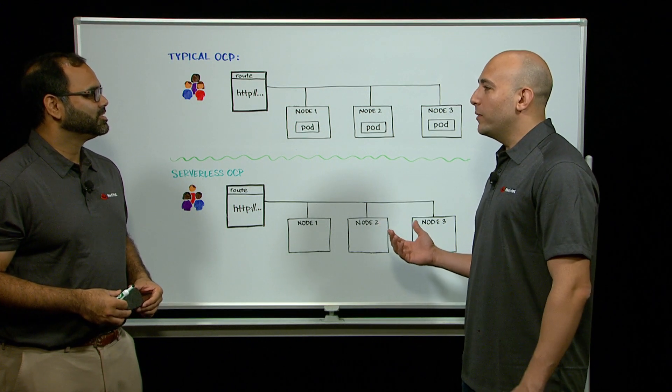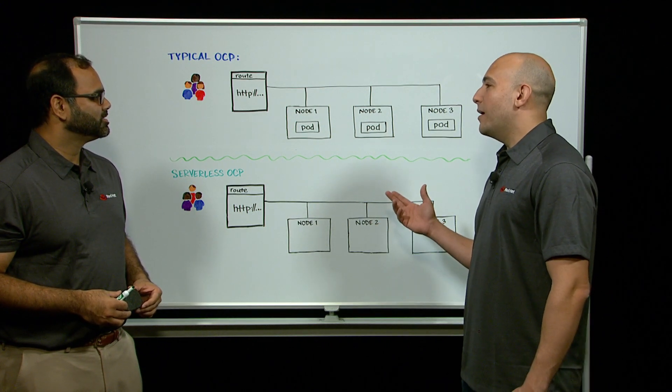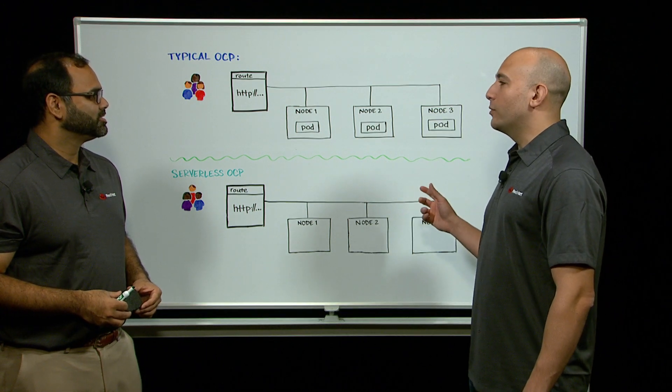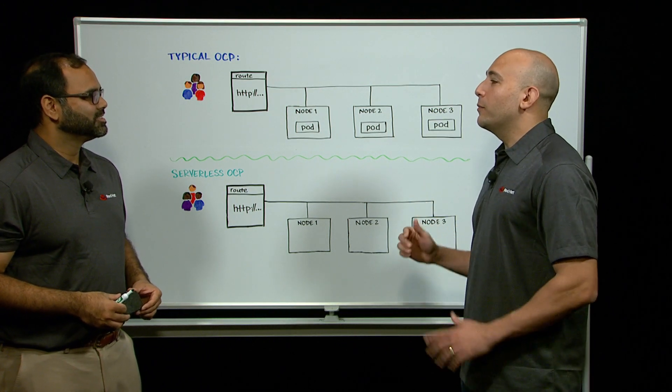And if you want a highly available application, we just have to scale it up and OpenShift will distribute the load through the nodes. And if the nodes go down, the application will still be running.